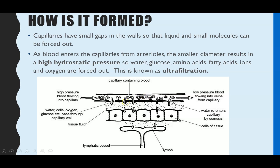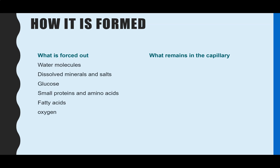That's how water, oxygen, glucose, and all those small molecules being transported in the blood end up being forced out and bathing the tissues, so cells can then gain access to the essential molecules they need. It's all to do with high hydrostatic pressure causing ultrafiltration, and this occurs at the arterial end of a capillary. That's how tissue fluid is formed.